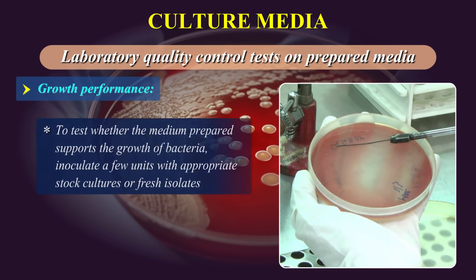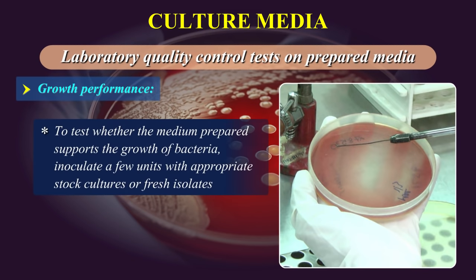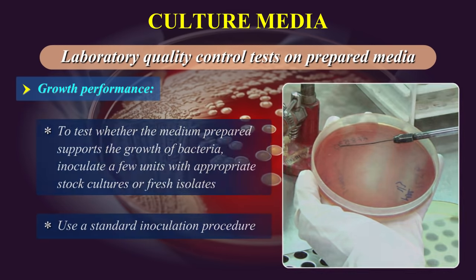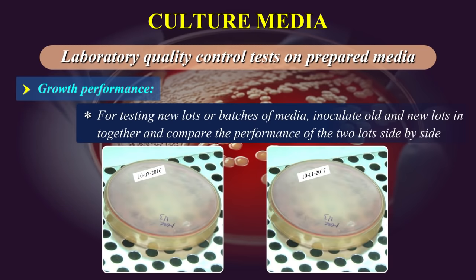Growth performance. To test whether the medium prepared supports the growth of bacteria, inoculate a few units with appropriate stock cultures or fresh isolates. Use a standard inoculation procedure. For testing new lots or batches of media, inoculate old and new lots together and compare the performance of the two lots side by side.